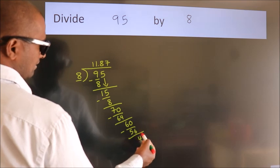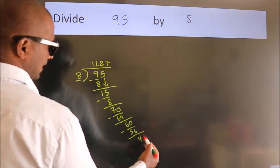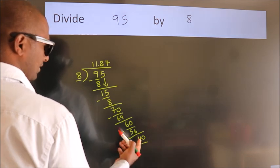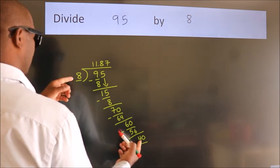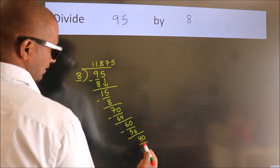After this we get 40. When do we get 40 in the 8 table? 8 fives 40.